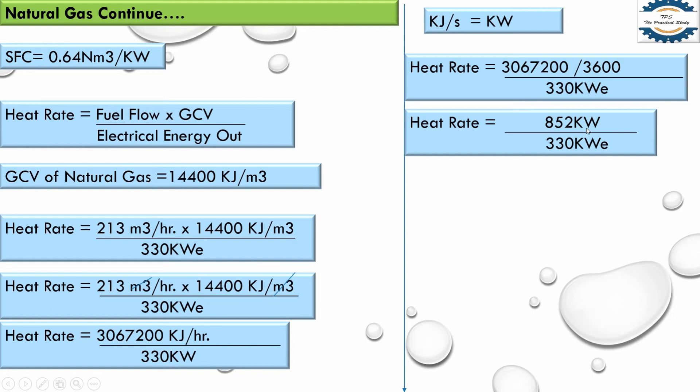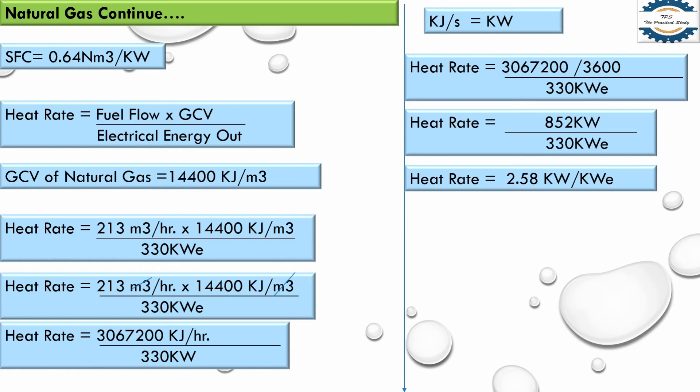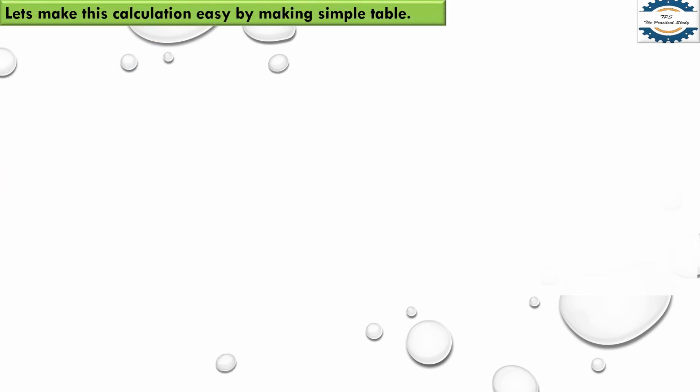So 852 kilowatt is the thermal energy into the generator and 330 kilowatt is the electrical energy output from the generator. Dividing these values, we get a heat rate of 2.58 kilowatt per kilowatt electrical output.